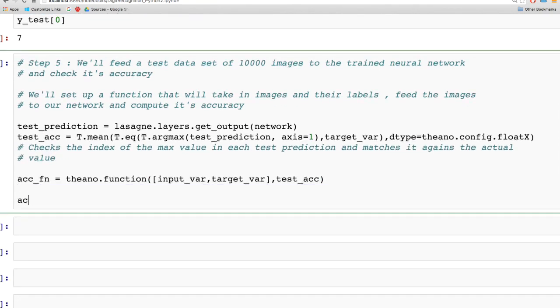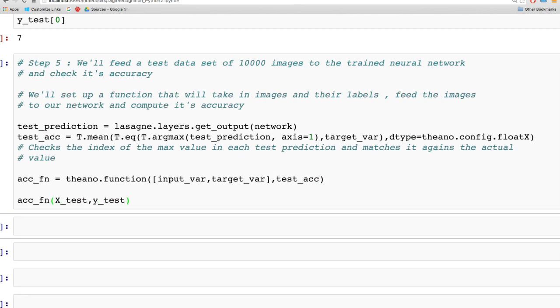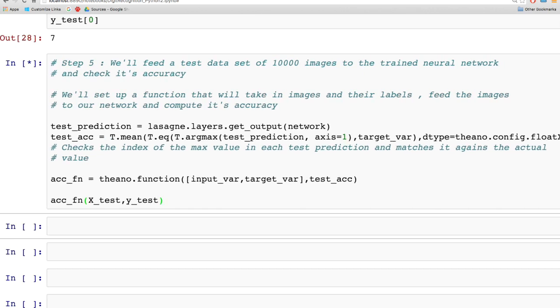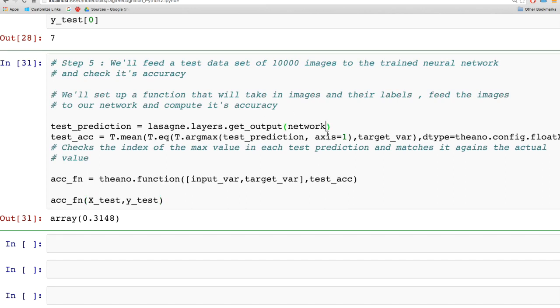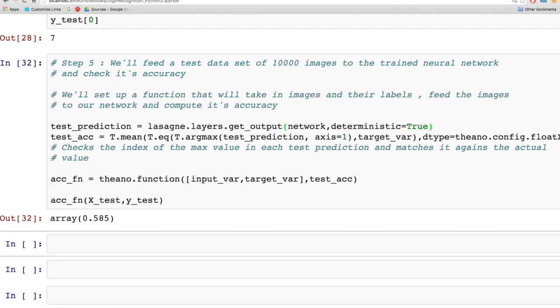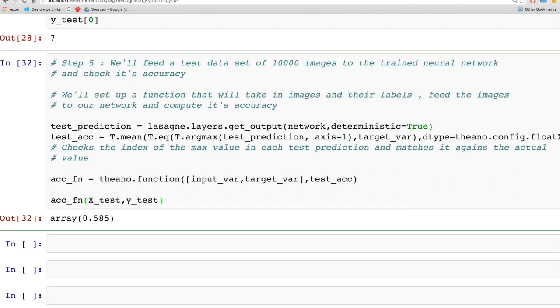We'll call this function on our test dataset X_test and Y_test to see the accuracy. It gave 31% accuracy. One thing we can fix is to set the option deterministic=True. This ensures that when the output is calculated, we're not doing the dropout we were using earlier.